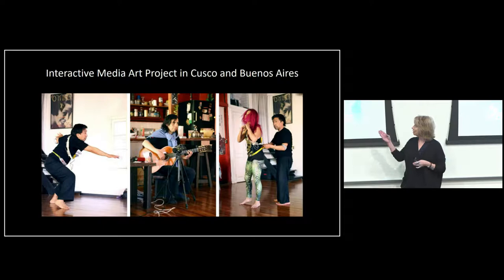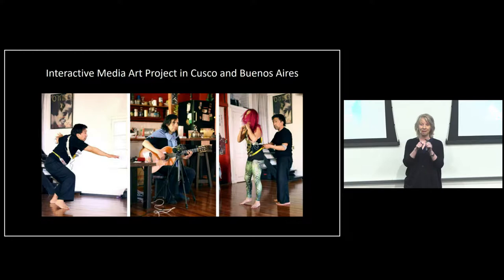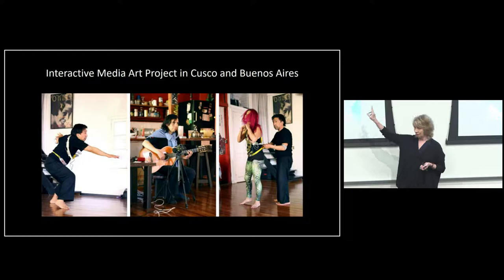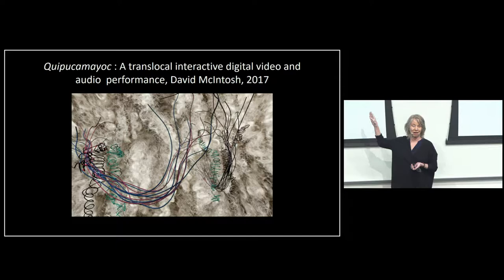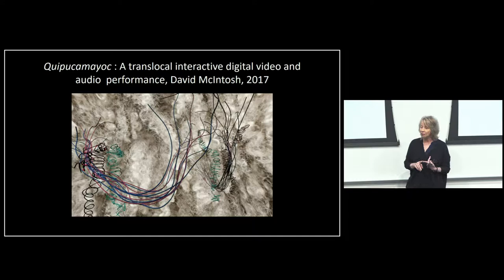This next slide is a different artist, David McIntosh. He is creating a network performance between Cusco in Peru and Buenos Aires in Argentina based on the Kipu Kamayak, which is an Andean traditional cultural form of writing that involved tying knots. The performers are dancers and musicians collaborating between these two spaces. The materiality we're investigating in the first slide is the affective experience of being in detention — revealing an aspect of everyday life we don't normally see: the detention system in Canada.